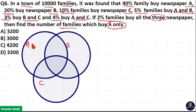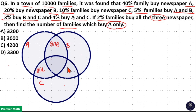Those who buy newspaper A and B is this intersection portion, i.e. A intersection B. Those who buy A and C is this intersection portion, i.e. A intersection C. Those who buy B and C is this intersection portion, i.e. B intersection C. Those who buy all three newspapers is this tri-junction portion, i.e. A intersection B intersection C.